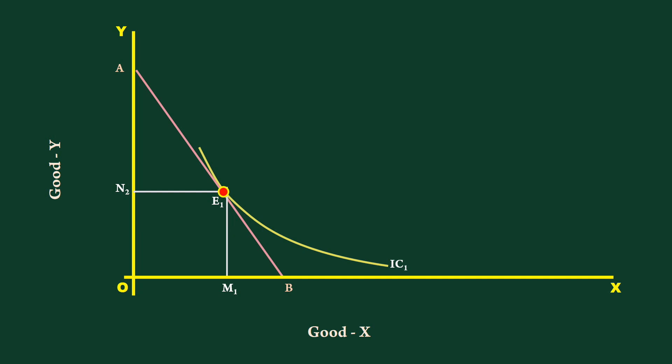The price line rotates in the anti-clockwise direction. The new price line AB2, relatively flat, is formed. The slope reflects the relative cheapness of good X.